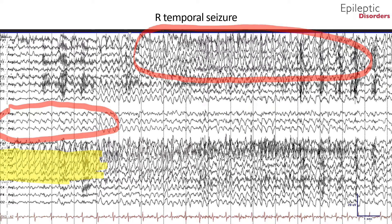In the second page of the seizure shown in average montage, the right temporal sharps have increased in frequency, now occurring between 4 to 5 hertz with amplitude also notably higher, shown by the yellow highlight. The spatiotemporal evolution of the left hemispheric and midline low amplitude delta waveforms now have a more sharply contoured appearance. Towards the end of the page, there are left hemispheric sharps with similar frequency and amplitude in comparison to the right hemispheric sharps, representing bilateral spread of the seizure — noted by the red highlight.